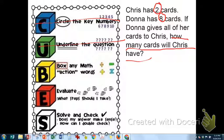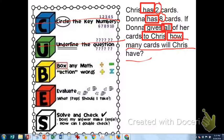It helps me focus on it. Now I'm going to box any math action words. I'm going to say has. That's what he starts with. I'm not going to box cards. I don't really care if he has cards or if he has balloons or whatever. Donna has. Donna gives all to Chris. How many will Chris have? So that's a lot of boxed words but they should be helpful. Because I have a lot of words here that are not boxed or circled. I definitely don't need those or care about them.